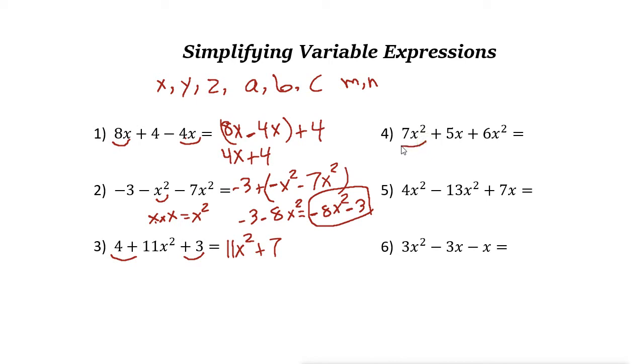Next one. The like terms here are 7x² and 6x². 7x² + 5x + 6x². These two are like terms, so you can combine them. 7x² + 6x² is 13x² + 5x.